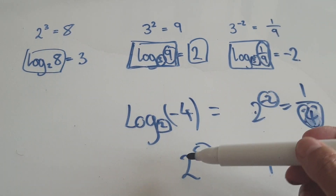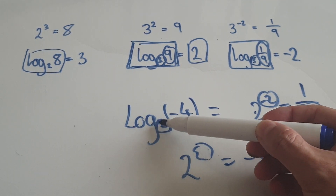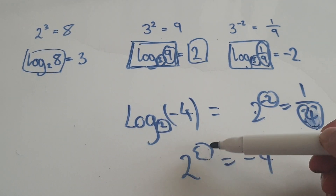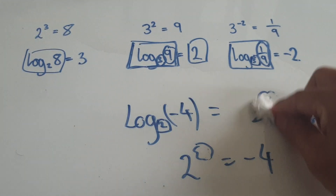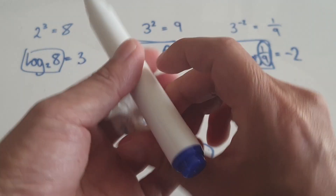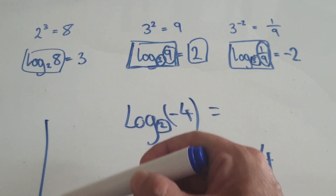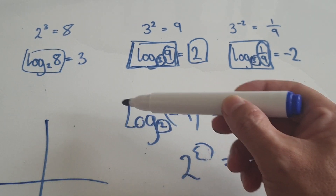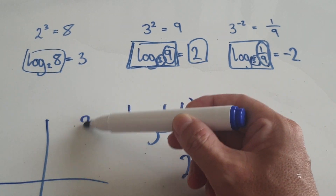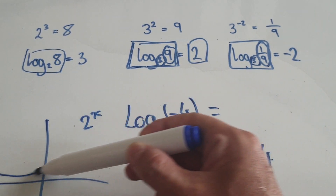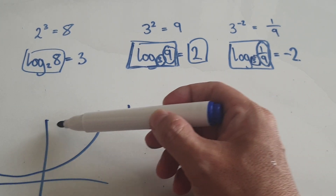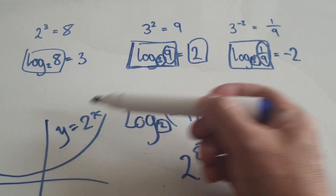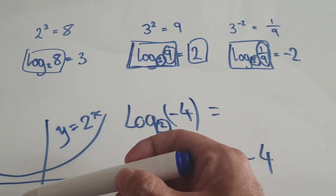2 to the power of what gives you negative 4? If you look at the graph of 2 to the power of x, which would look like this, I'm asking you: 2 to the power of what would give me negative 4?